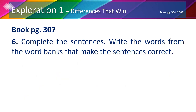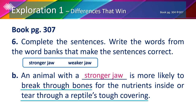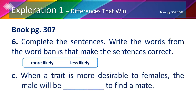In part B, using the words 'stronger jaw' and 'weaker jaw': an animal with a blank is more likely to break through bones for the nutrients inside or tear through a reptile's tough covering. In order to break a bone or tear through tough hide, the jaguar must have a stronger jaw. In part C, using 'more likely' and 'less likely': when a trait is more desirable to females, the male will be blank to find a mate — the answer is 'more likely.'